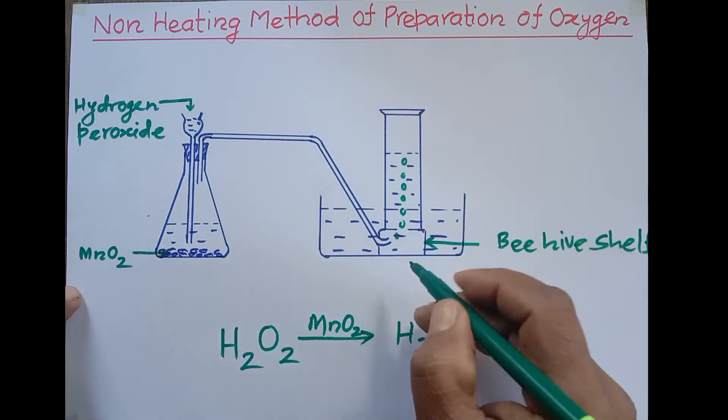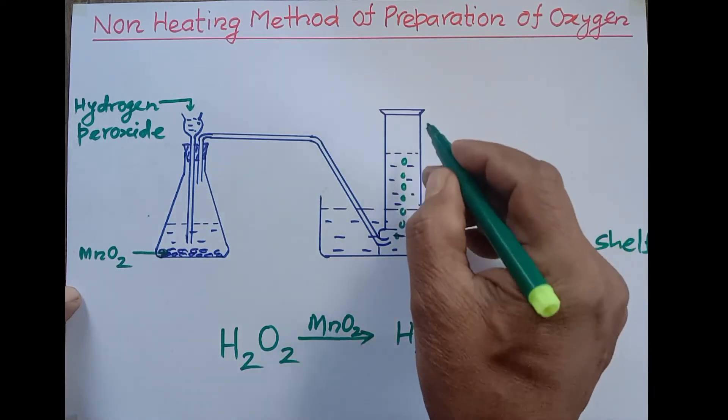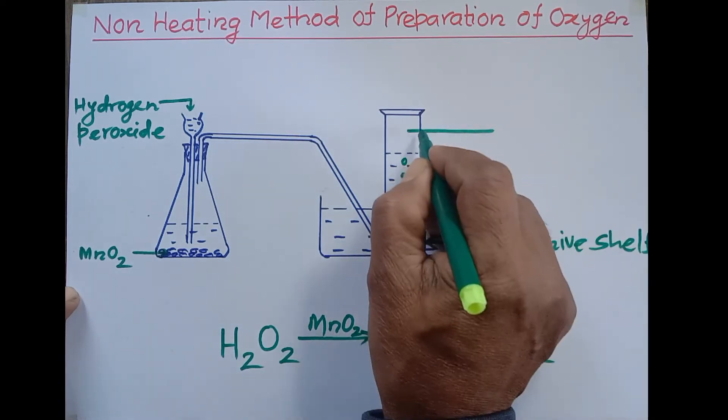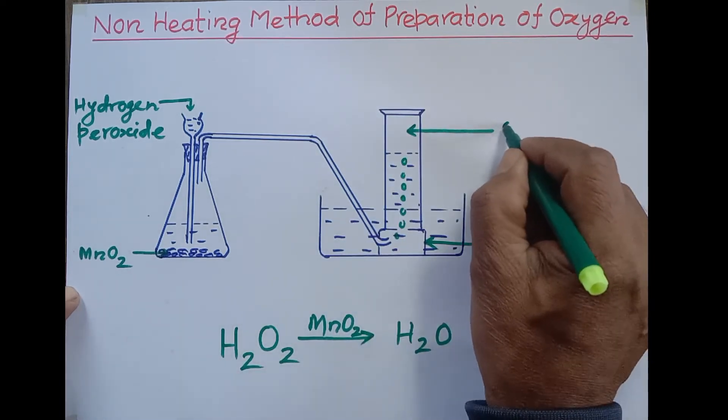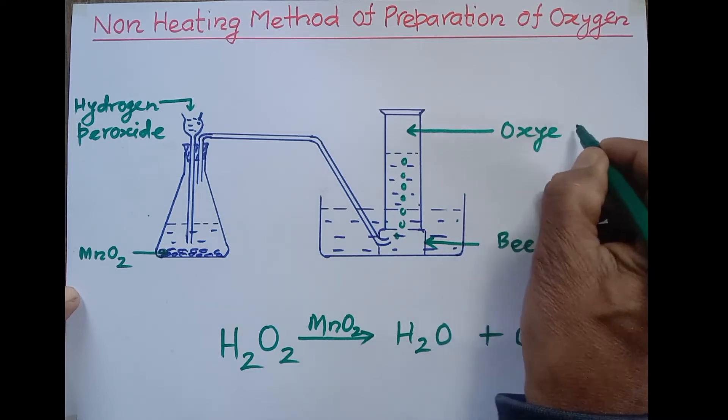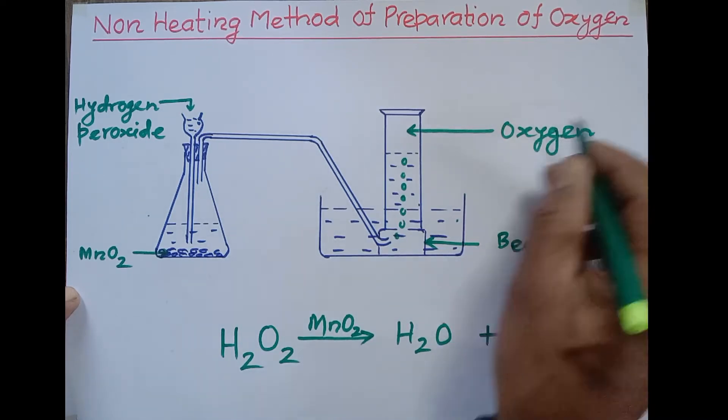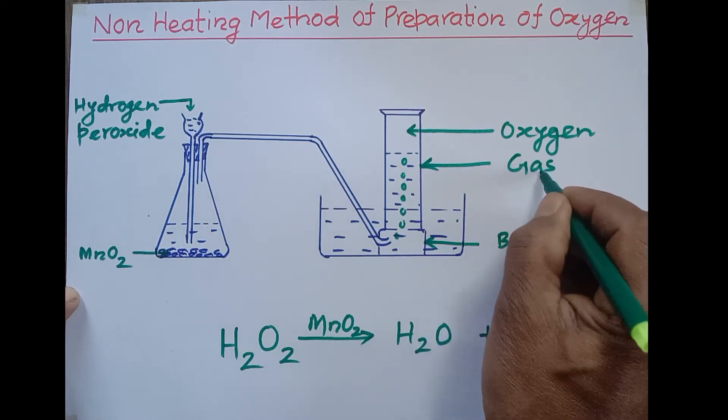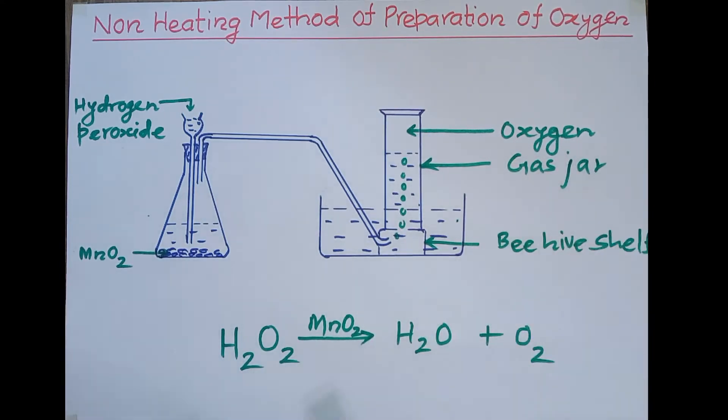Because oxygen's solubility is negligible in water and it is lighter than water, it displaces water in the downward direction and begins to collect at the top of this gas jar. This is where the oxygen gas is being collected. This is the gas jar and this is the method of preparation of oxygen gas without heating. This is not a dangerous method.